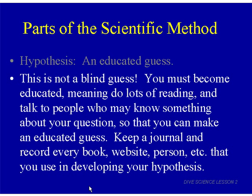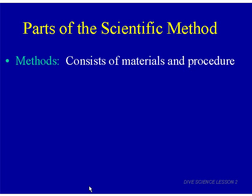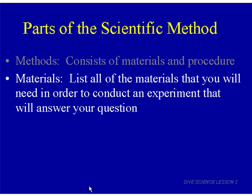We've talked about our question — that's always how we start — then we have a hypothesis, and next is actually performing the experiment, called the methods section. The methods consist of two parts: materials and procedure. The materials are everything you'll need to conduct your experiment. You exclude any materials that won't help you answer your question and only use materials that will help in answering it.